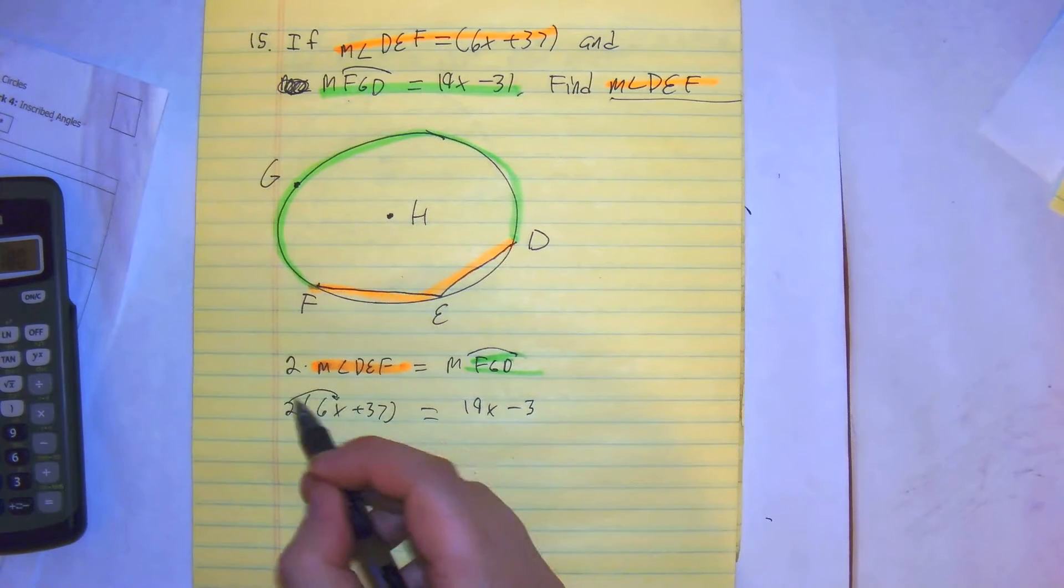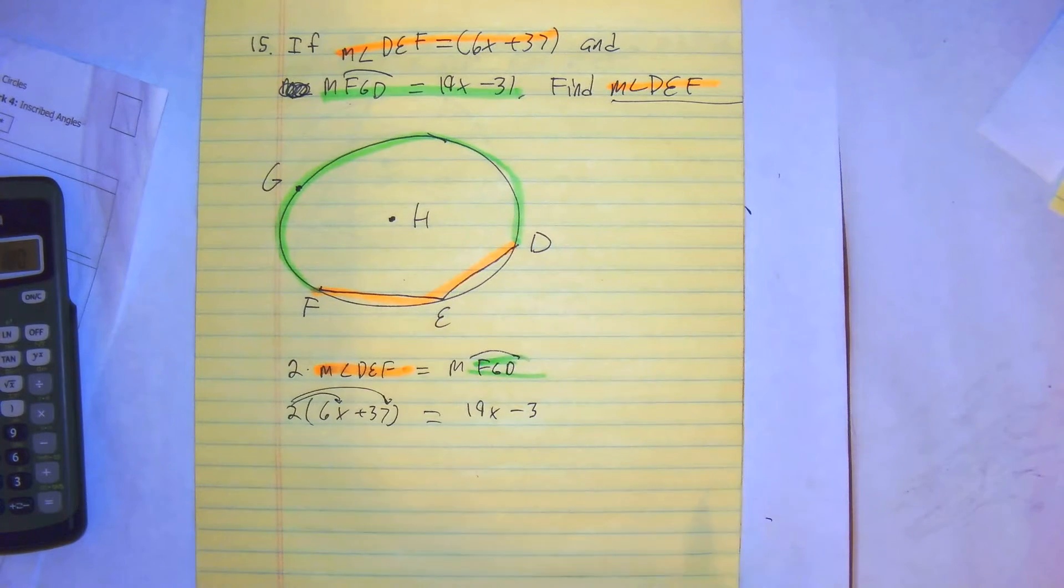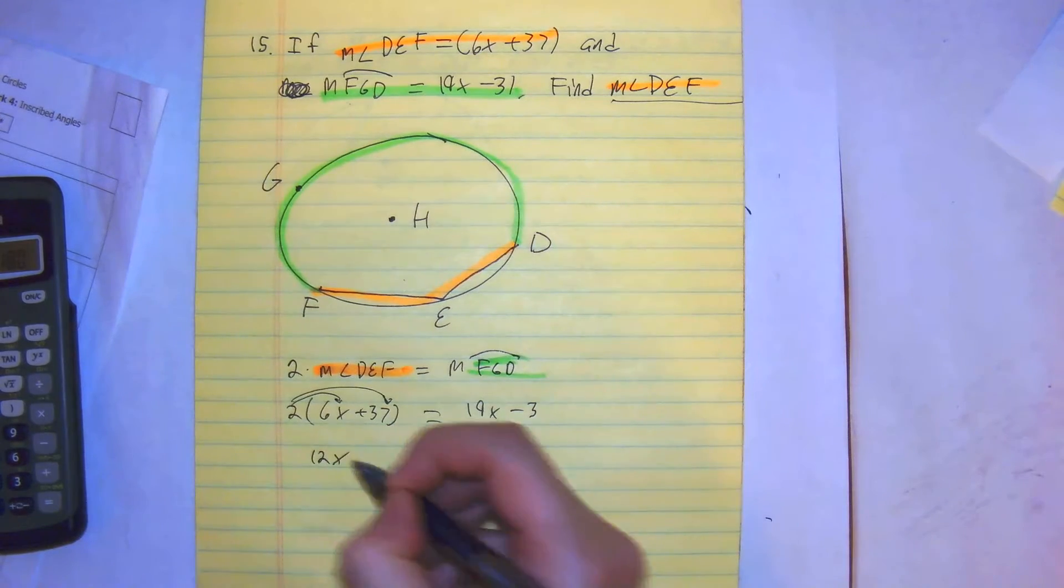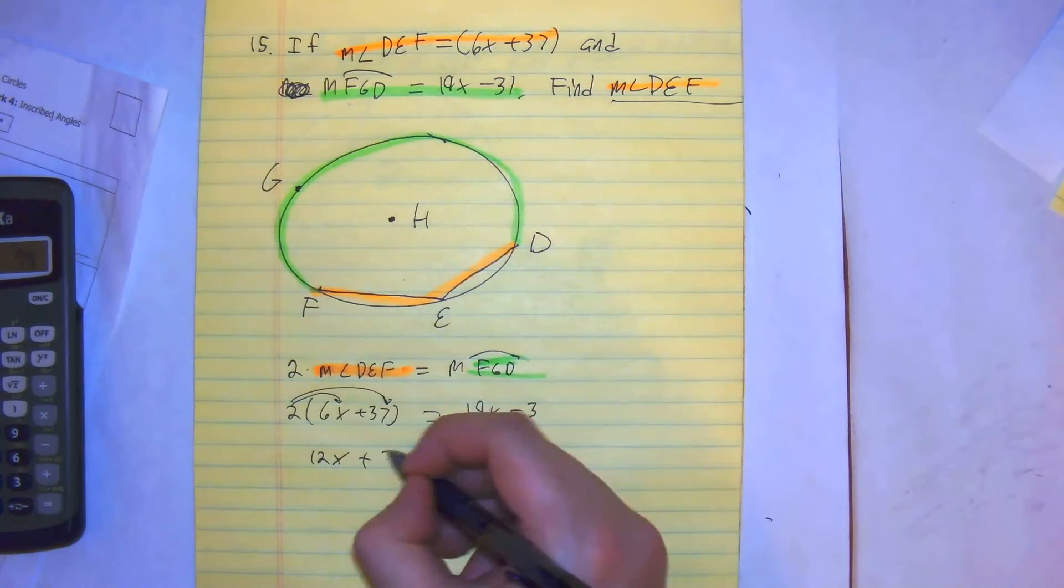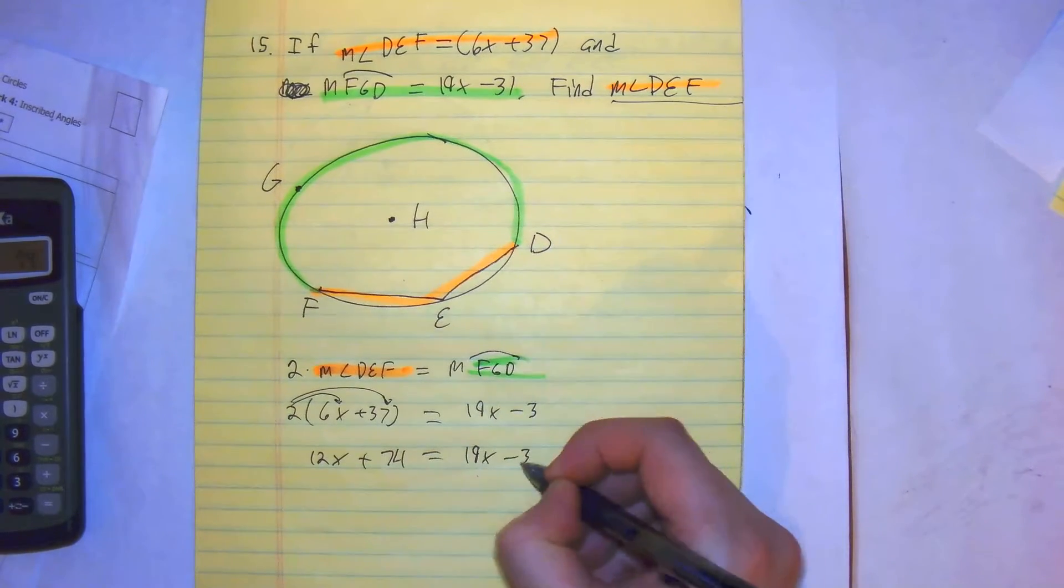Distribute. You get 12x plus 74, since 37 times 2 is 74, equals 19x minus 3.